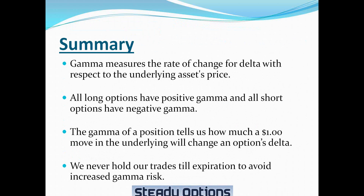Summary: Gamma measures the rate of change for delta with respect to the underlying asset price. All long options have positive gamma and all short options have negative gamma. The gamma of a position tells us how much a dollar move in the underlying will change the option's delta. At Steady Options, we never hold our trades till expiration to avoid increased gamma risk.